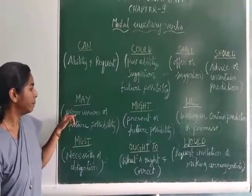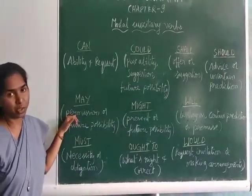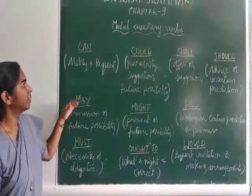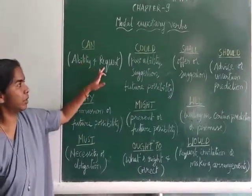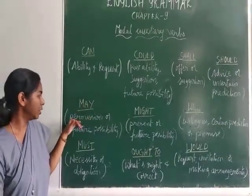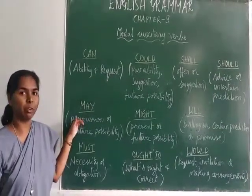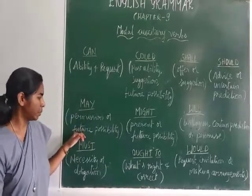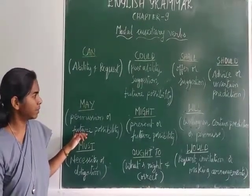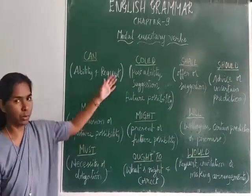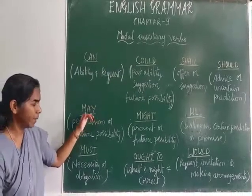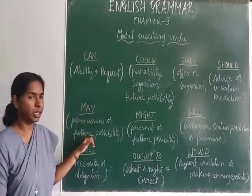The next one is 'may'. May is used for seeking permission, which is the formal way of doing so. We said can is also used for requests but it is informal, whereas may is used for seeking permission in a formal way. May is also used to express future possibility, just like could.